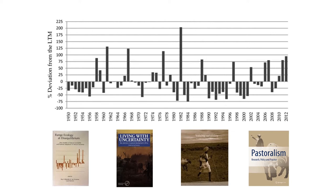If you were thinking about a montane system such as in Tibet, these peaks and troughs might be snow events. So what we're looking at is high variability in the ecosystem and in the key factor — in this case rainfall — that affects primary production, the growth of grass, which in turn affects secondary production, the growth of animals.